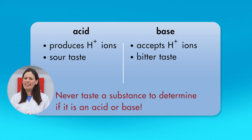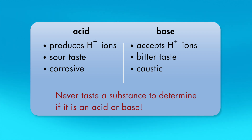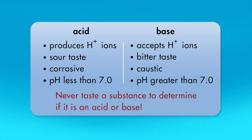However, you should never taste a substance to determine if it is an acid or a base. Acids are corrosive, which means they gradually dissolve some inorganic materials, such as metals, and strong acids destroy organic tissue. Strong bases are caustic, which means they can destroy organic tissue and cause severe burns. The term pH is used to indicate how acidic or basic a solution is. The pH of an acid is less than 7.0, and the pH of a base is greater than 7.0.